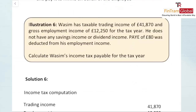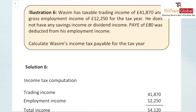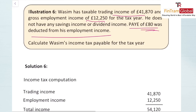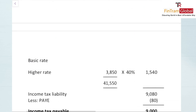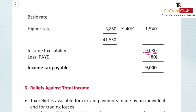Illustration: Basim has taxable trading income of £41,870 and gross employment income of £12,250. He has no savings or dividend income. PAYE of £80 was deducted from his employment income. We calculate total income, deduct PA of £12,570, apply the 20% and 40% thresholds to get income tax liability, and then deduct the £80 PAYE already paid to get the final income tax payable.